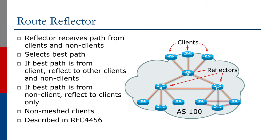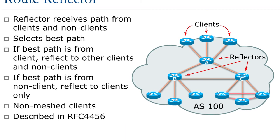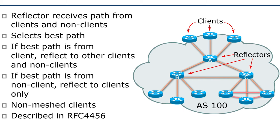Looking at the diagram in this slide, we see three routers in the core of the network, and each of the three routers has three clients. Focusing on router A: if a prefix is originated by one of its clients — whether from outside the autonomous system or introduced into the AS by the client itself — that prefix will be sent by normal IBGP to router A, which will then send it on to the other clients.